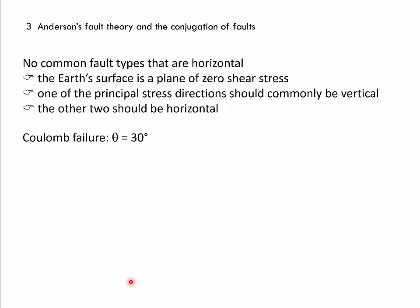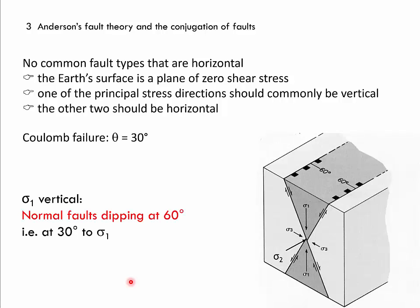Combining this with Coulomb failure and a theta angle of 30 degrees, we can draw the principal cases in which faults should form — and this is in fact the orientation in which we find them. If sigma 1 is the largest principal stress vector and is vertical, we would find normal faults dipping at 60 degrees, because between sigma 1 and the fault plane we find a theta angle of 30 degrees. This also applies to the conjugate fault with an opposite shear sense.